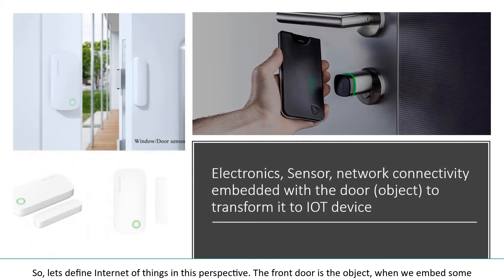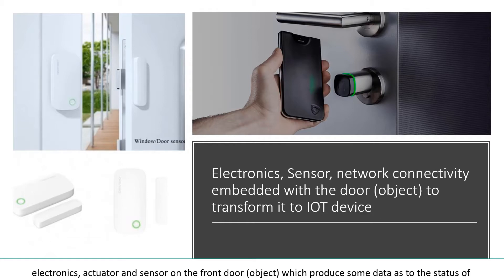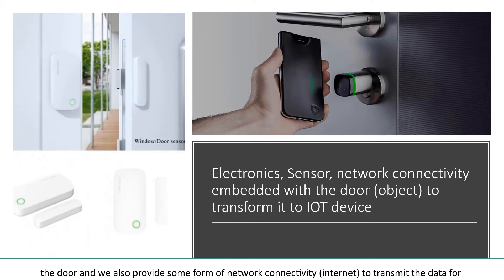So let's define Internet of Things in this perspective. The front door is the object. When we embed some electronics, actuators and sensors on the front door object, which produce some data as to the status of the door, and we also provide some form of network connectivity — Internet — to transmit the data for processing and actions, then we have transformed our front door into an Internet of Things device.